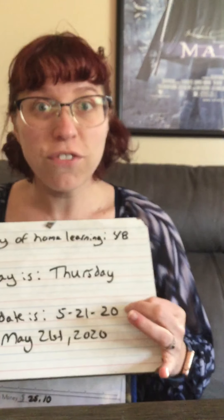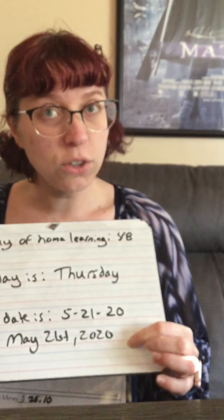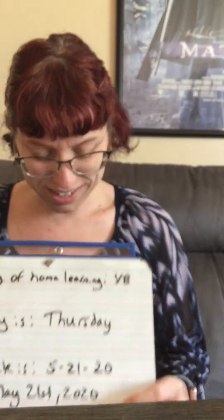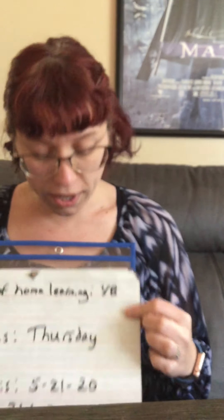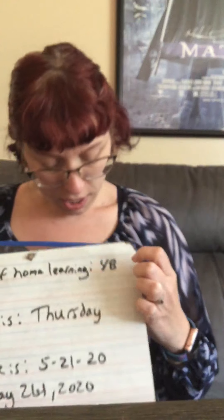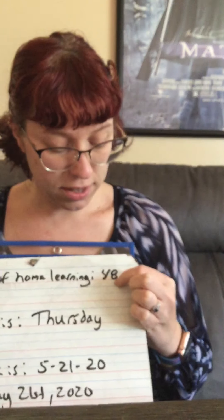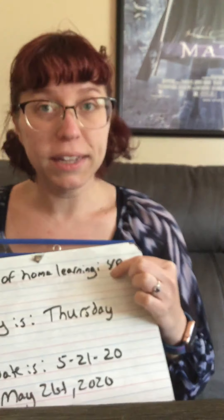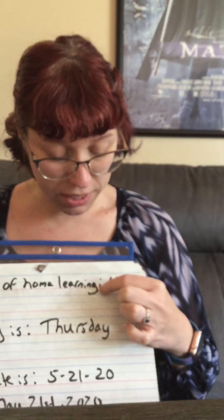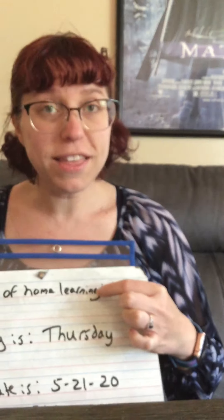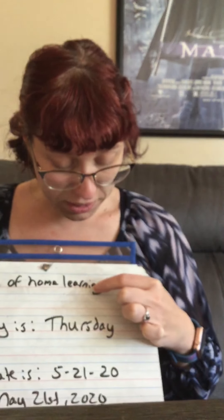The date is 5-21-20, or May 21st, 2020. The day of home learning is 48. So in the ones place — always count from the back — is eight. Tens place is four. Hundreds place is zero. Thousands place is zero. Ten thousands place is zero. Hundred thousands place is zero.